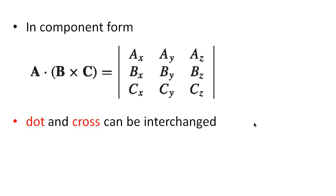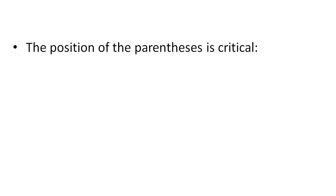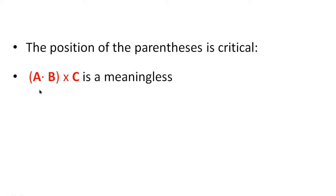As a property of the scalar triple product, dot and cross can be interchanged: a dot b cross c equals a cross b dot c. However, the position of the parentheses is critical. If you change the grouping to (a dot b) cross c, then a dot b is a scalar and you cannot take the cross product of a scalar — so that expression is meaningless.